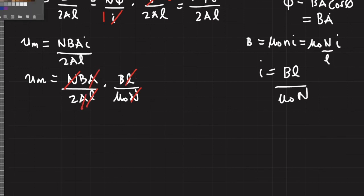So our final expression for the magnetic energy density is B squared over 2 mu naught.